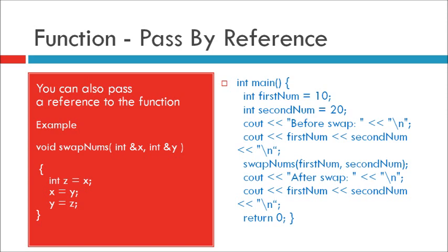void swapNums in bracket integer address x comma integer address y in bracket. Integer z equal to x, x equal to y, and y equal to z. This code swaps two numbers. But here we have used the address sign, that means the reference.